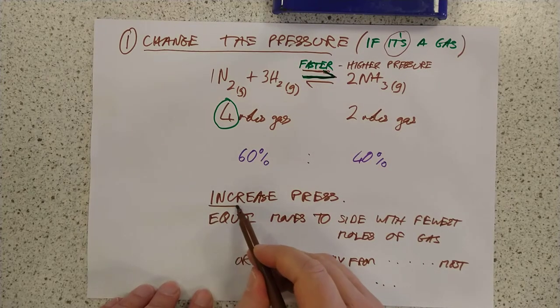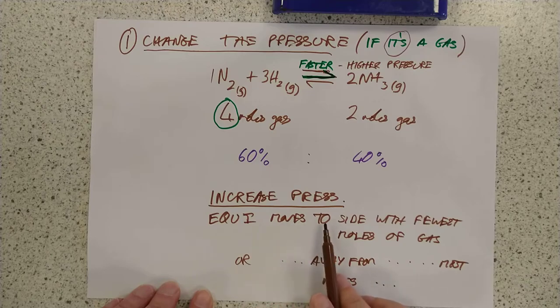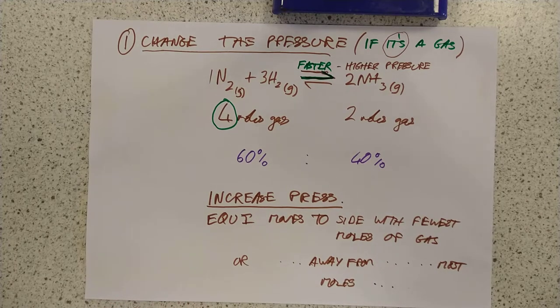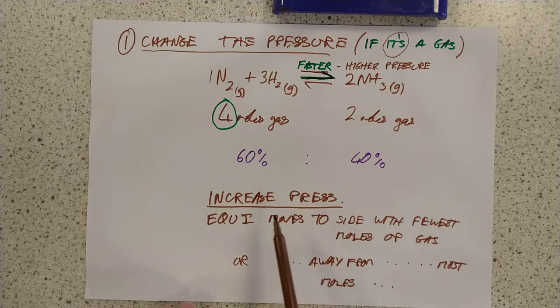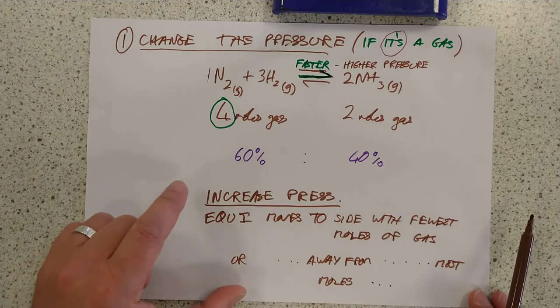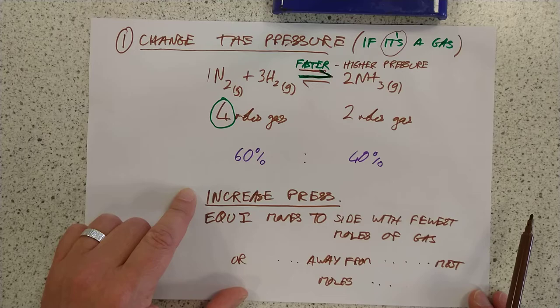So, here's my written summary, guys. If you increase the pressure, the equilibrium moves to the side with the fewest moles of gas. Or you could have it moving it away from the side with the most moles of gas. Either of these are true. Both of these are true. You notice I haven't said what happens if you decrease the pressure because I'll leave you to memorize personally. I think just memorizing one version of these three rules is enough. And then you can flip it if the situation demands it.